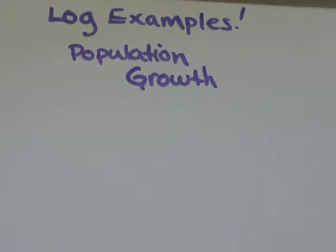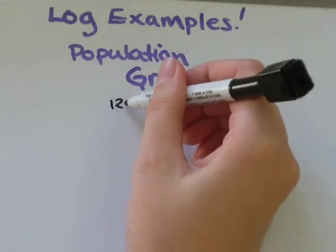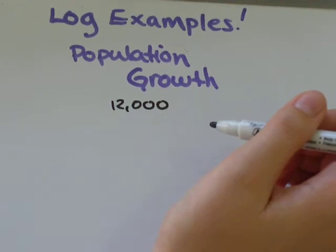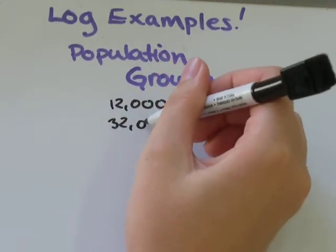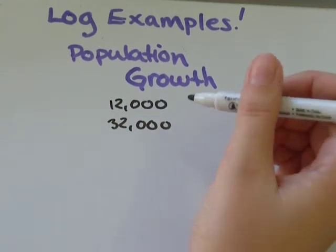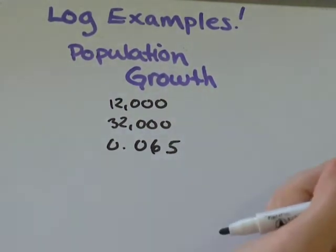I've got a question with an initial population of 12,000 people. I end up with 32,000 and my rate of growth was 0.065.